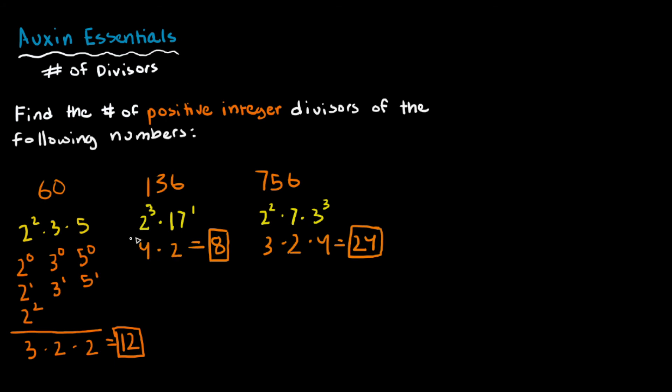So I hope you found it interesting. We used different areas of subjects. First, we prime factorized each of these numbers. And then we looked at ways to find a pattern to count the number of ways we can choose a factor. So I hope that was interesting.